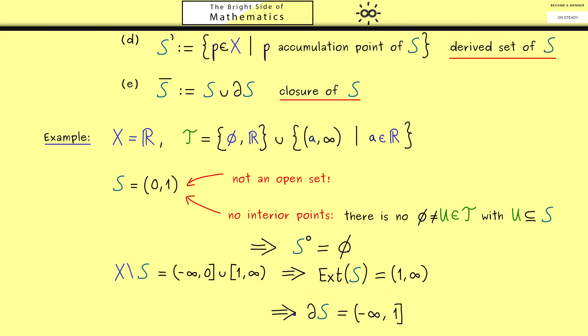Again, this might look strange, but it is simply because our topology is chosen in this way. All open sets stretch from one point to plus infinity, so they can't see what happens in the other direction to minus infinity. And therefore, we have the conclusion that the boundary of this set is everything on the left-hand side.